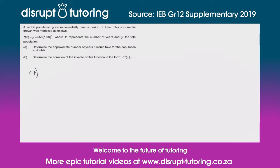What would the population be at the start? At the start we know x = 0, so our population would be 558. Double 558 is 1116, and we're looking for the growth to 1116. So: 1116 = 558 × 1.08^x.